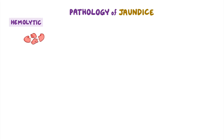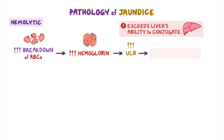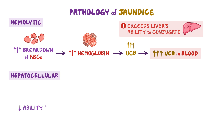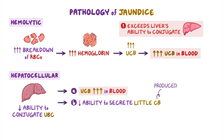Let's discuss the pathology of each type of jaundice. In hemolytic jaundice, there's excessive breakdown of red blood cells, releasing all their hemoglobin into the blood. The excess hemoglobin is then degraded into unconjugated bilirubin, but the high amount of this bilirubin exceeds the liver's ability to conjugate it. As a result, the excess unconjugated bilirubin will start to build up in blood. Similarly, in hepatocellular jaundice, the liver damage decreases its ability to conjugate the unconjugated bilirubin, causing unconjugated bilirubin to build up in blood. In addition, the liver damage also impairs its ability to secrete the little conjugated bile that's produced into bile, thus also causing a buildup of conjugated bilirubin in blood.